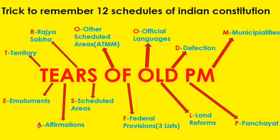Using the TEARS OF ALL PM mnemonic: T stands for Territory (First Schedule - territories and states), E for Emoluments (Second Schedule), A for Affirmations (Third Schedule), R for Rajya Sabha seat allocation (Fourth Schedule), S for Scheduled Areas (Fifth Schedule). These cover the first five schedules.